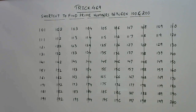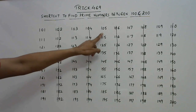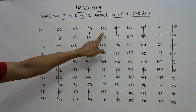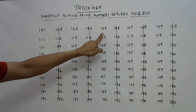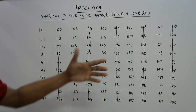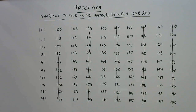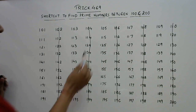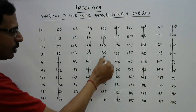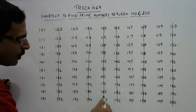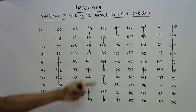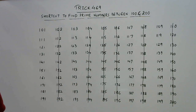Now, out of the remaining odd numbers, you can very easily identify that 105 is a multiple of five. All numbers ending with five are multiples of five, so they are not prime. We can strike off this entire column as well, because every number in it is divisible by five.